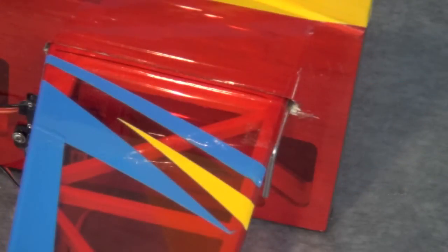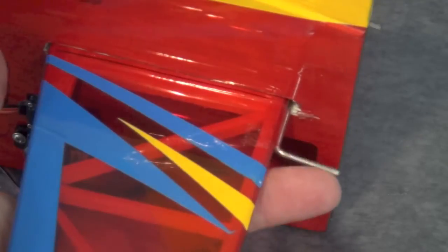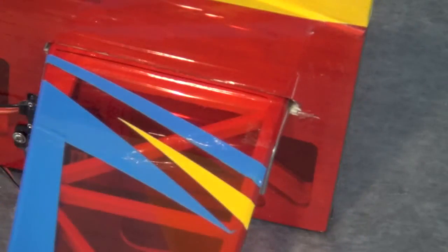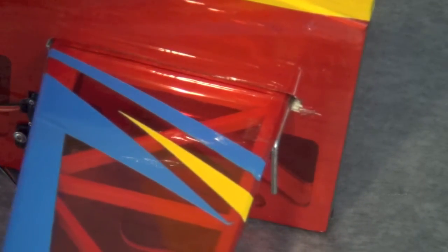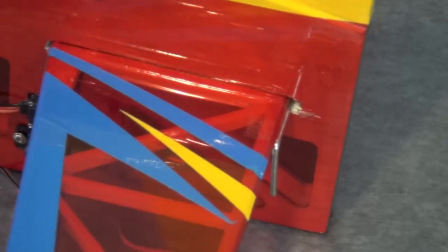All right guys, remember that elevator joiner. Make sure that you put it in place before you finish gluing the horizontal stabilizer in, otherwise you will not be able to get this back in there. And be careful with the glue so you don't glue it to anything. So everything is lined up. I'm going to go ahead and glue the stabilizer in once I final check it, and then we'll go from there.